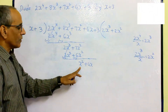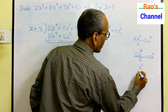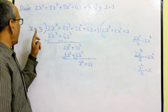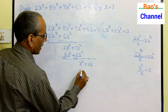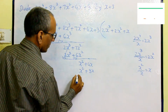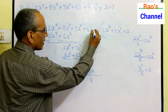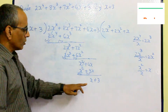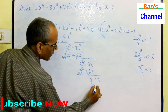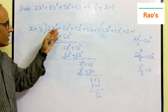Now x² is the first term in the dividend part, so x² by x gives x. So plus x is the next term in the quotient. x into x² gives x², plus x into 3 gives 3x. Again subtraction — the remainder is x, the last term plus 3. So x divided by x gives 1, plus 1 in the quotient. You get x+3 again, and by subtraction you get 0.